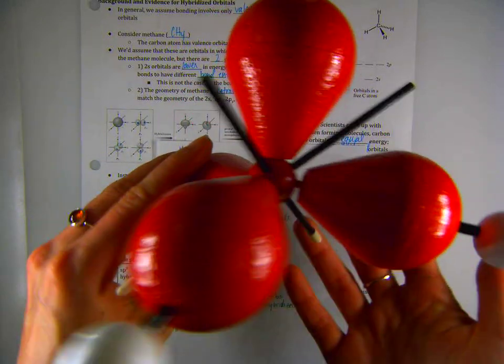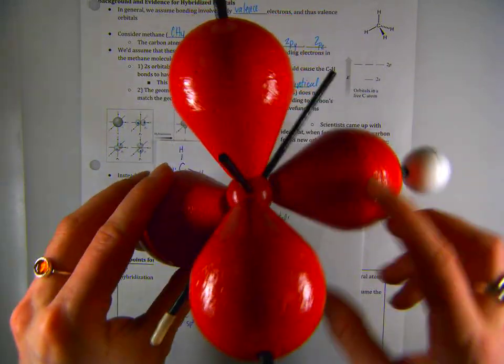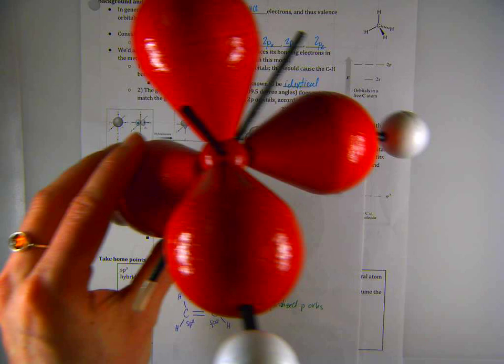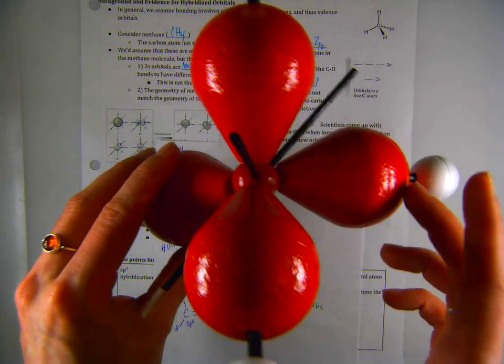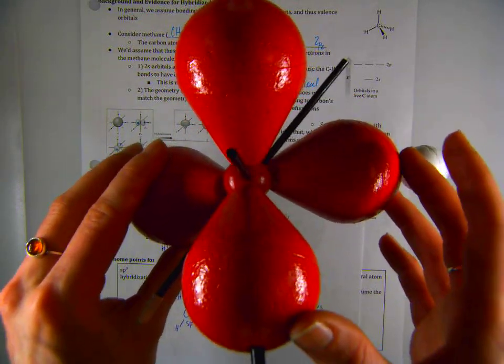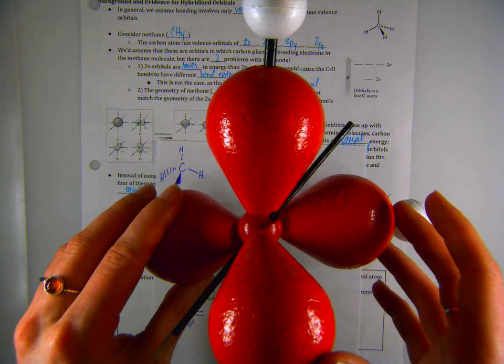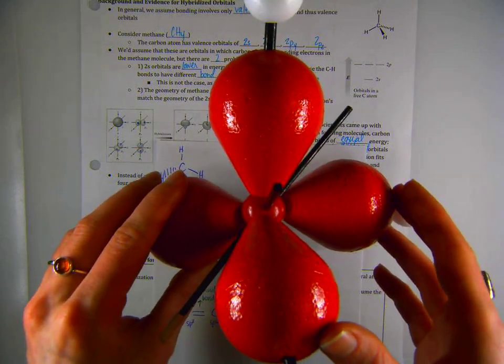These red lobes are representing the SP3 hybridized orbitals. So I have four of them, and they're in a tetrahedral shape. You can see my 109.5 bond angles here between the hydrogen atoms. So these represent the orbitals that are housing the bonded electrons. Hopefully that's making sense so far.